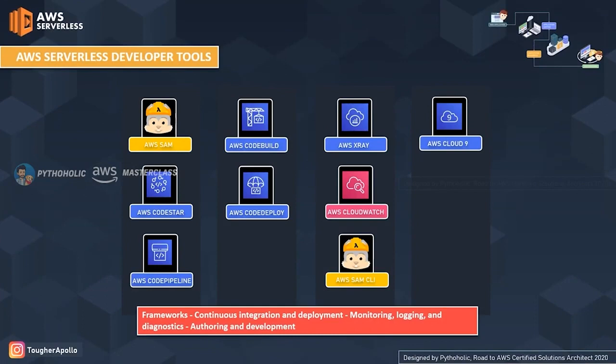Along with serverless computation, AWS also provides serverless developer tools. For the serverless framework there is AWS SAM — the Serverless Application Model. For continuous integration and deployment there is AWS CodeStar, CodePipeline, CodeDeploy, and CodeBuild. For monitoring, logging, and diagnostics there is AWS CloudWatch and AWS X-Ray. For authoring and development there is AWS Cloud9 and the AWS SAM CLI — the Serverless Application Model CLI.